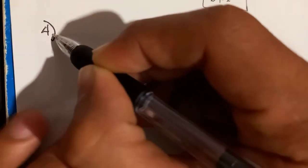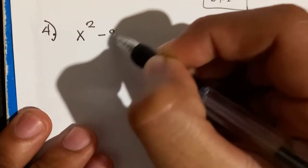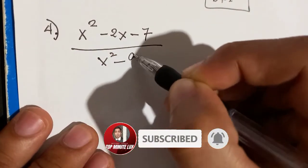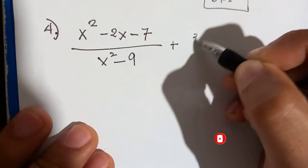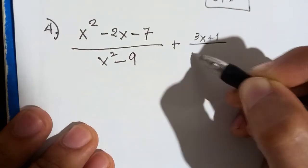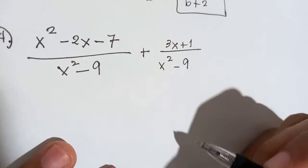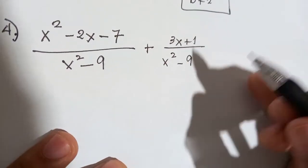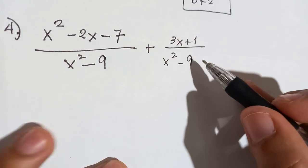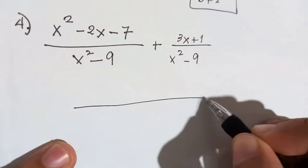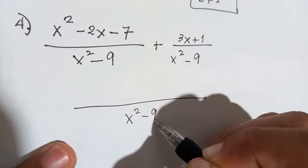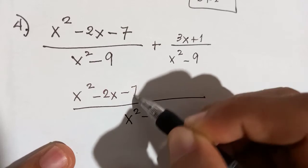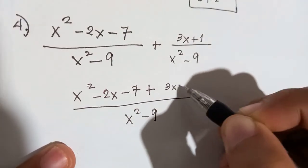Example: x squared minus 2x minus 7 over x squared minus 9, plus 3x plus 1 over x squared minus 9. In this example, expect that we will be using factoring. Our denominators are common, so copy the denominator: x squared minus 9. Then add the numerators: x squared minus 2x minus 7 plus 3x plus 1.